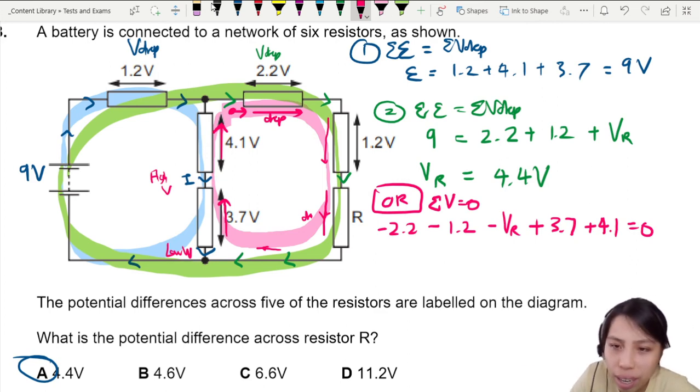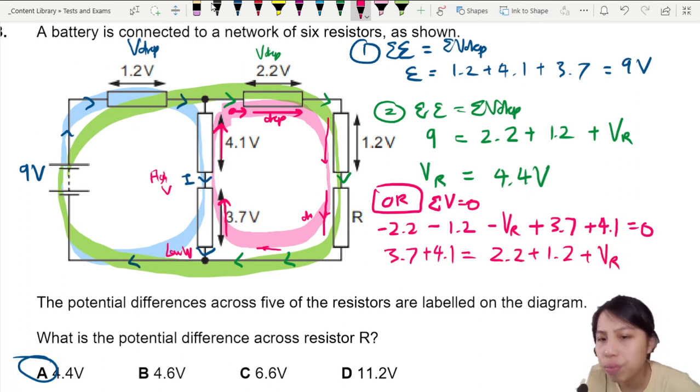If we rearrange this R, then it will be something like this: 3.7 plus 4.1 equals 2.2 plus 1.2 plus VR. Doesn't that look familiar? So if you use this method, you should get VR also 4.4.